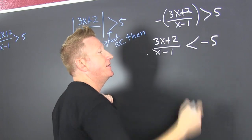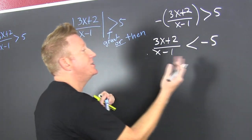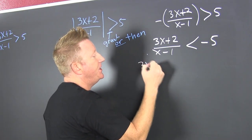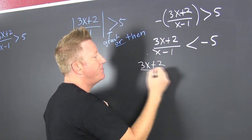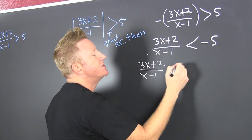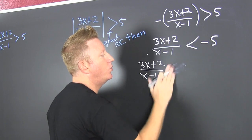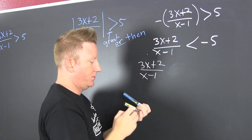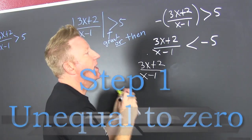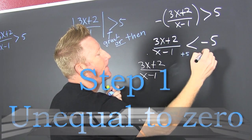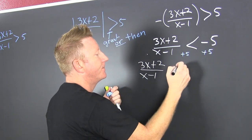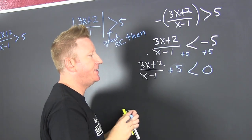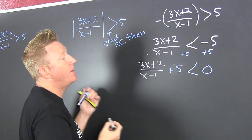Don't forget to negate that other side over there too. We need to get it all to the left. So we see that (3x + 2)/(x - 1) is smaller than... I add that 5 to both sides. 5 and minus 5 is nothing. Now we need a common denominator.